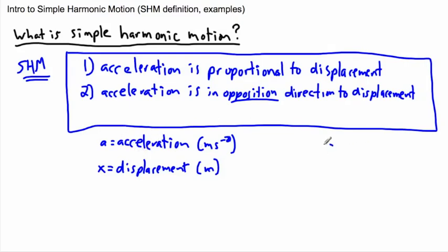Remember that F equals MA — one version of Newton's second law. It tells you that if you have some sort of mass, there's also acceleration, so force and acceleration are related. If you have a force, you have acceleration — but we mean an unbalanced, net force. That means if you add up all the force vectors and they don't add up to zero, say they add up to something to the right, then you accelerate to the right.